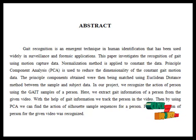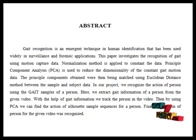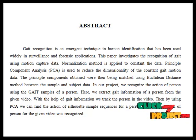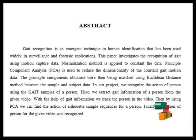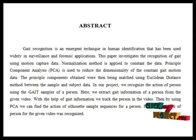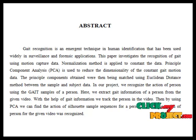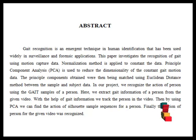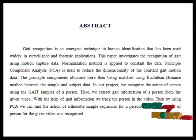A normalization method is applied to the input data. In the first step, we extract the gait sequences from the given video. Using the gait sequences, we track the person, and finally we recognize the action of the person using the PCA method.